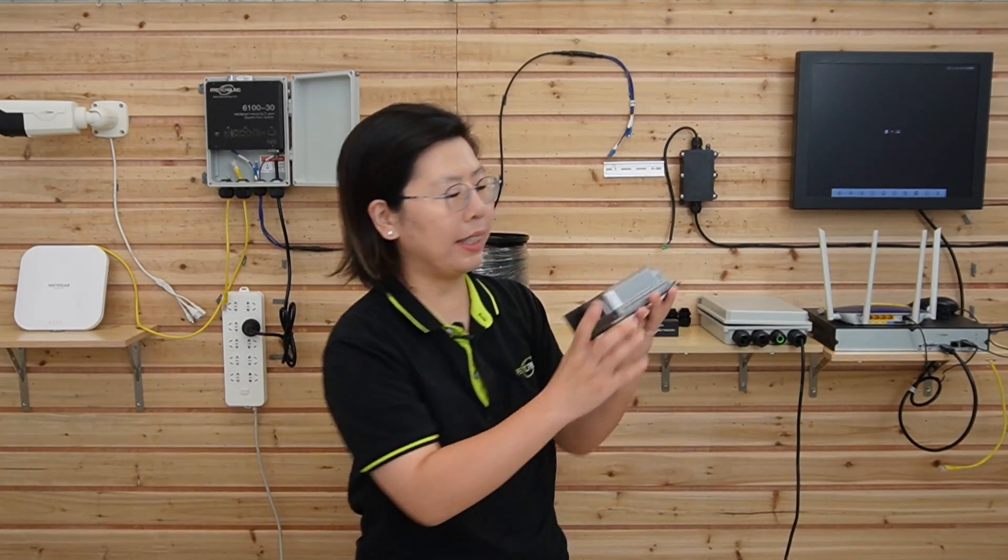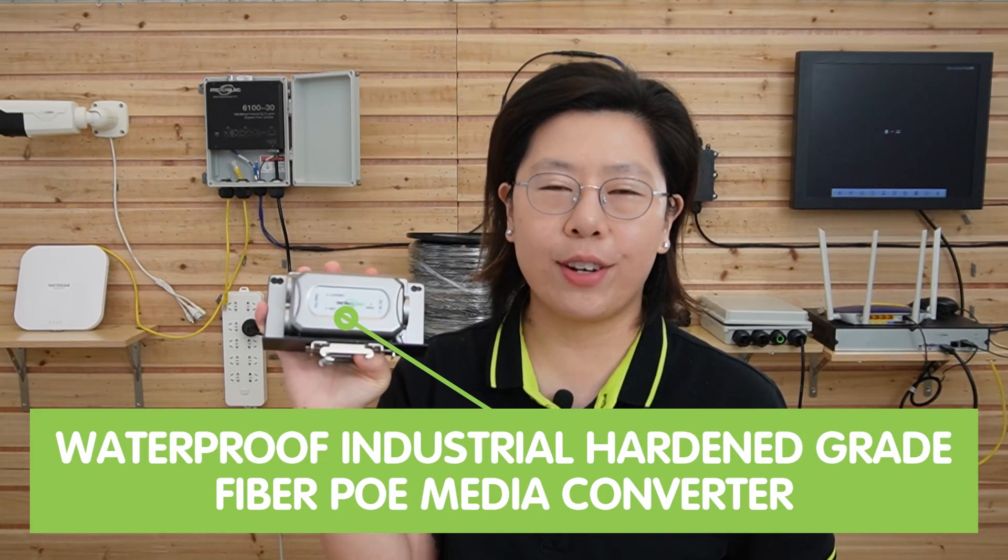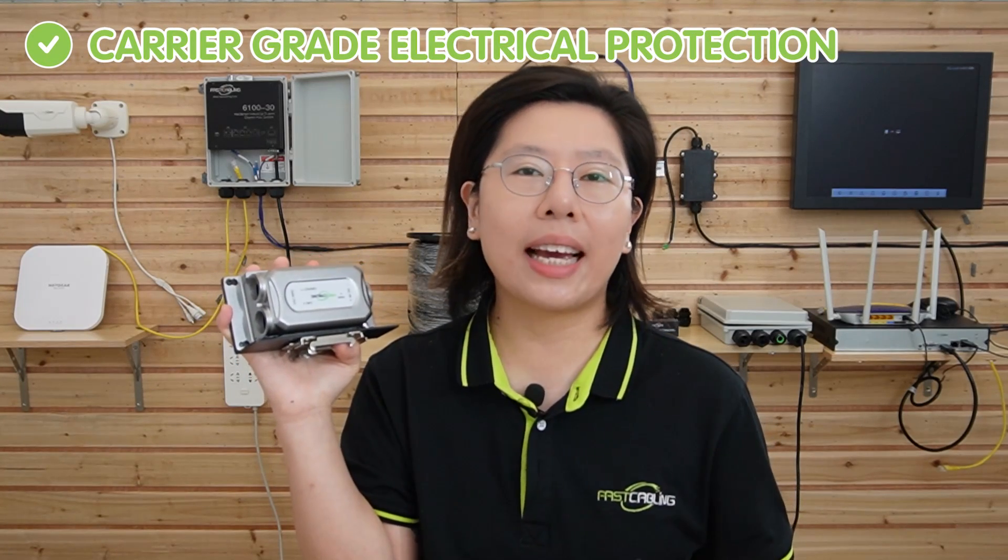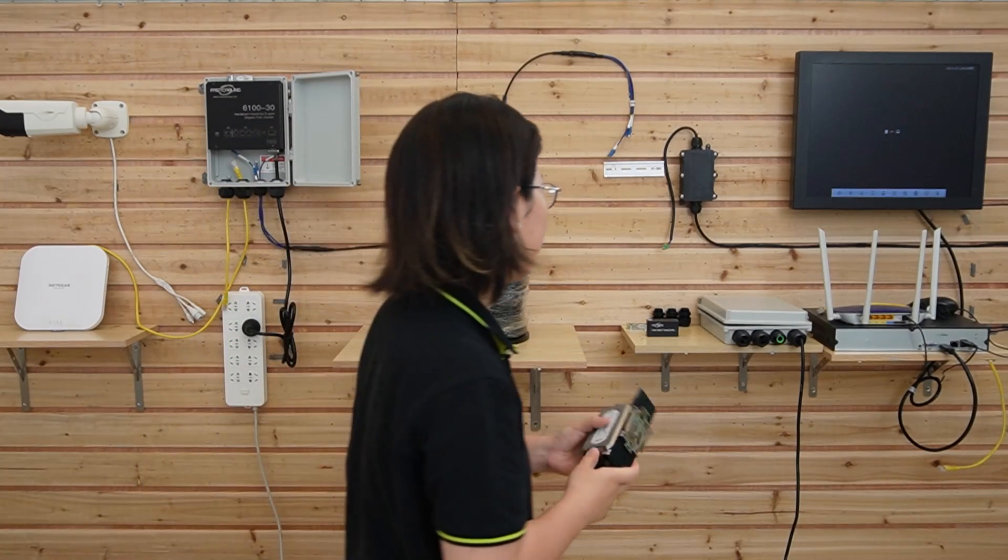But since today we are going to set up an outdoor application, we are going to use this one. This is our hardened-grade outdoor fiber PoE media converter. By adding this device, you are able to set up IP devices over kilometers with fiber optic cable without concern about bad weather due to its IP67 waterproof rating and hardened-grade design. It comes with a wide range operating temperature from minus 20 degrees up to 60 degrees and carries great electrical protection against lightning and other power surges. It also has a special mounting tool, so you can mount it on a DIN rail.